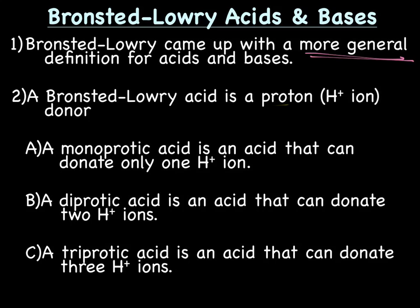First of all, Bronsted-Lowry calls an acid a proton donor, or an H1+ donor. Why would we call H1+ a proton? Well, hydrogen atom is made up of only one proton and one electron, no neutrons. So it's just a proton and an electron. To become H1+, or the hydrogen ion, it has to lose an electron. All that's left on hydrogen ion is a proton. Thus, some people call acids proton donors.